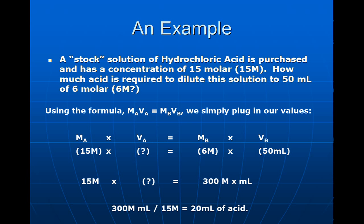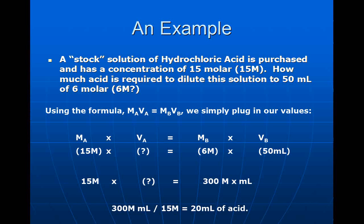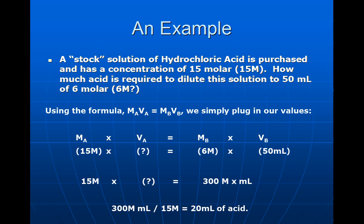So, to get this, what this means at the end of the day, then, is we have to add 20 milliliters of acid and get it to 50 milliliters by adding 30 milliliters of water. That's our final answer there. This is how you perform a dilution.